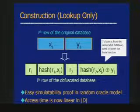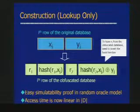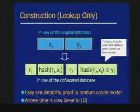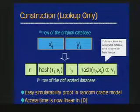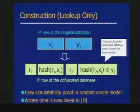Here is a row of the original database: (X_i, Y_i). I'm going to replace it with an obfuscated row that looks like this: a random number R1, then hash(X, R1), another random number R2, and another hash(X, R2) XORed with Y_i. I'm claiming this obfuscation satisfies my definition for the lookup function. The proof is fairly easy at least in the random oracle model, though not so easy without it.